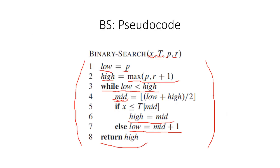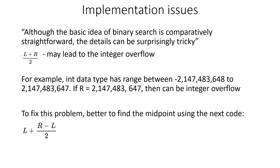On each step we need to find the middle element. To find it, we add low (the left side) plus high (the right side) and divide by two. However, there can be an issue: if we do left plus r divided by two, it may lead to integer overflow. The implementation of binary search may look easy, but there are tricky points — using this formula can lead to integer overflow.